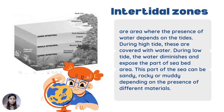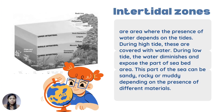Intertidal zones are areas where the presence of water depends on the tides. During high tide, these are covered with water. During low tide, the water diminishes and exposes part of the seabed area. This part of the sea can be sandy, rocky, or muddy depending on the presence of different materials.